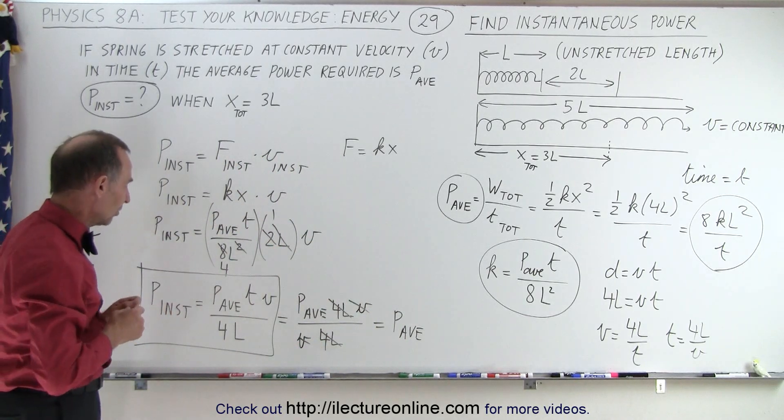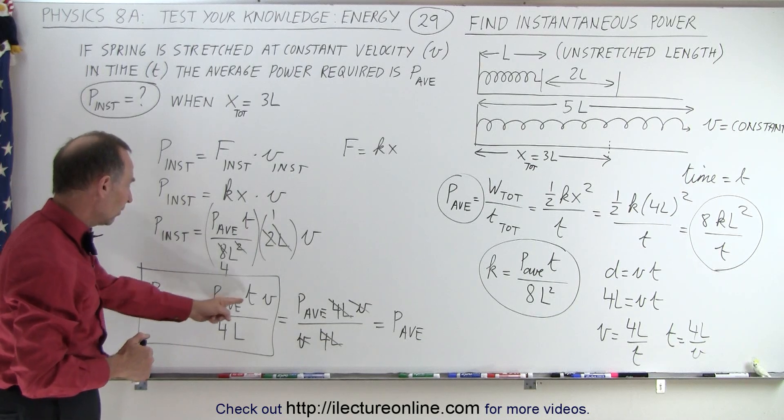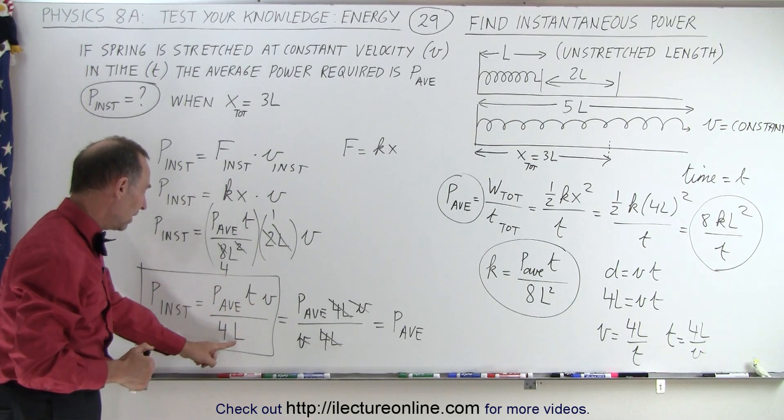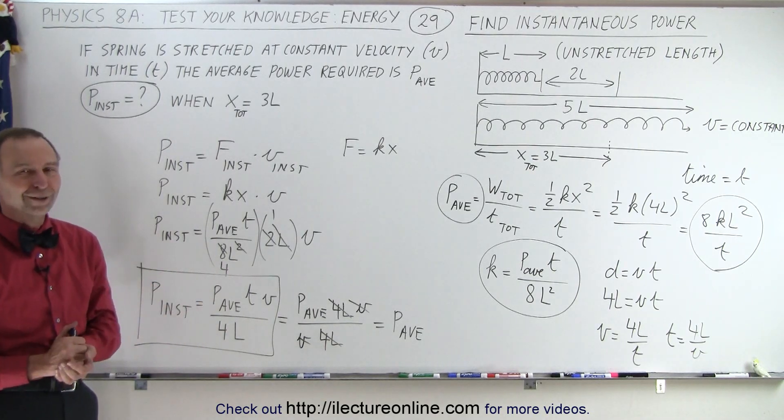It's kind of an interesting observation, but anyway, we can say that the instantaneous power can be written in terms of the time, the velocity, and the length, and the average power like this, and that is how that's done.